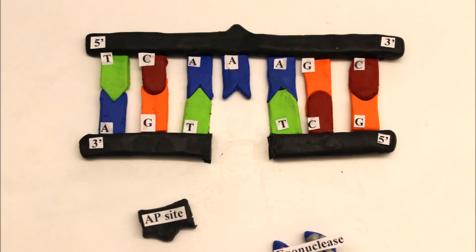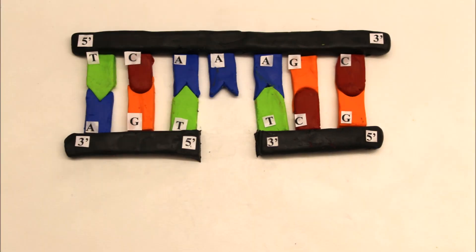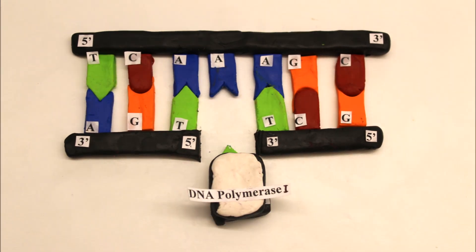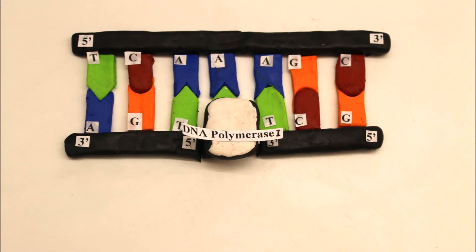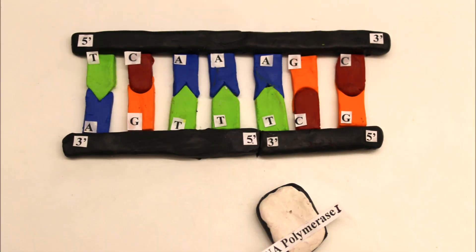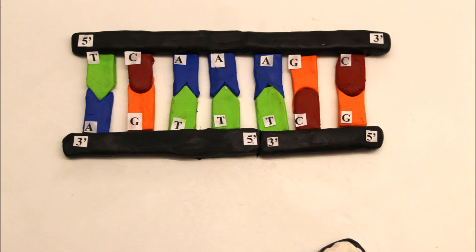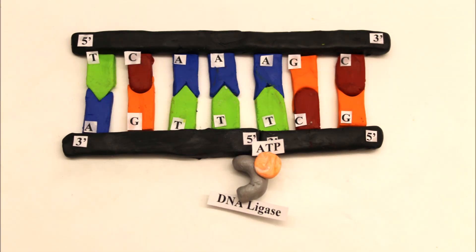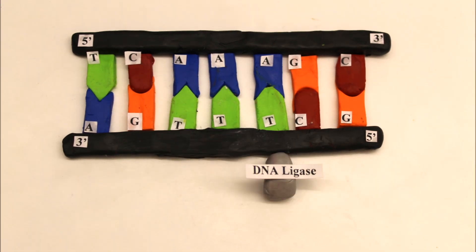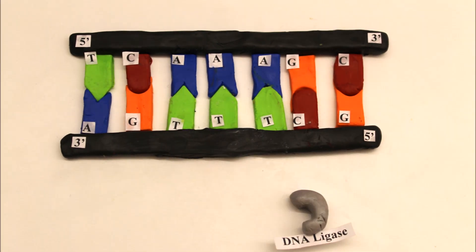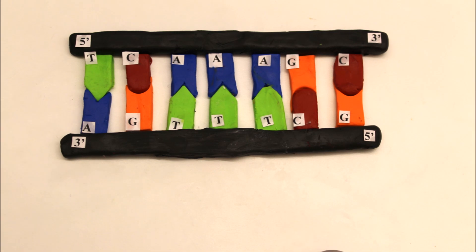DNA polymerase I comes in and fills the resulting gap, and continues repair synthesis by inserting the correct base using the undamaged strand as a template. Finally, DNA ligase seals the 5' end of the gap with the help of ATP. This completes the process of base excision repair.